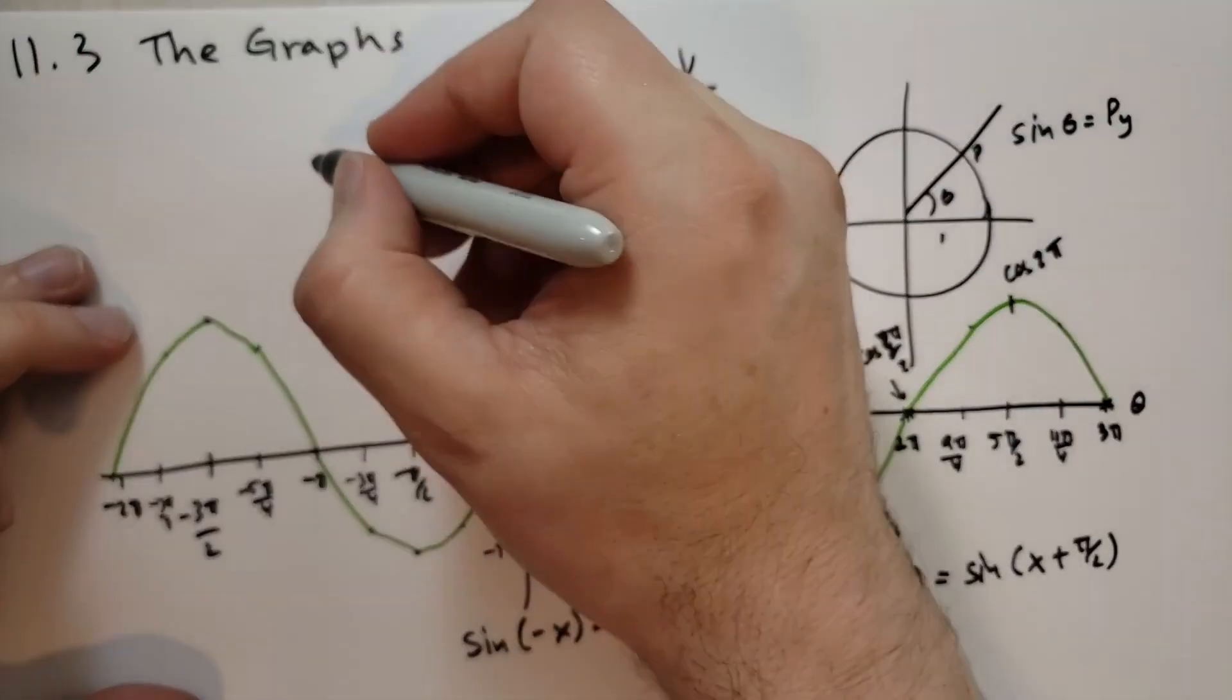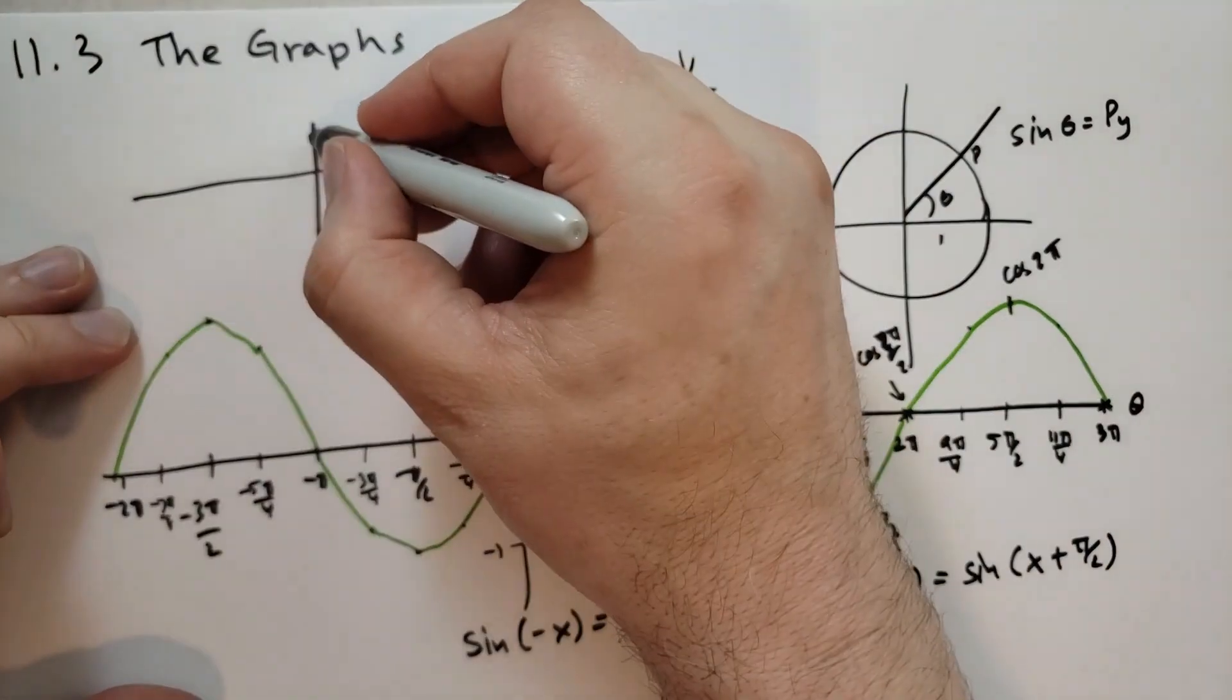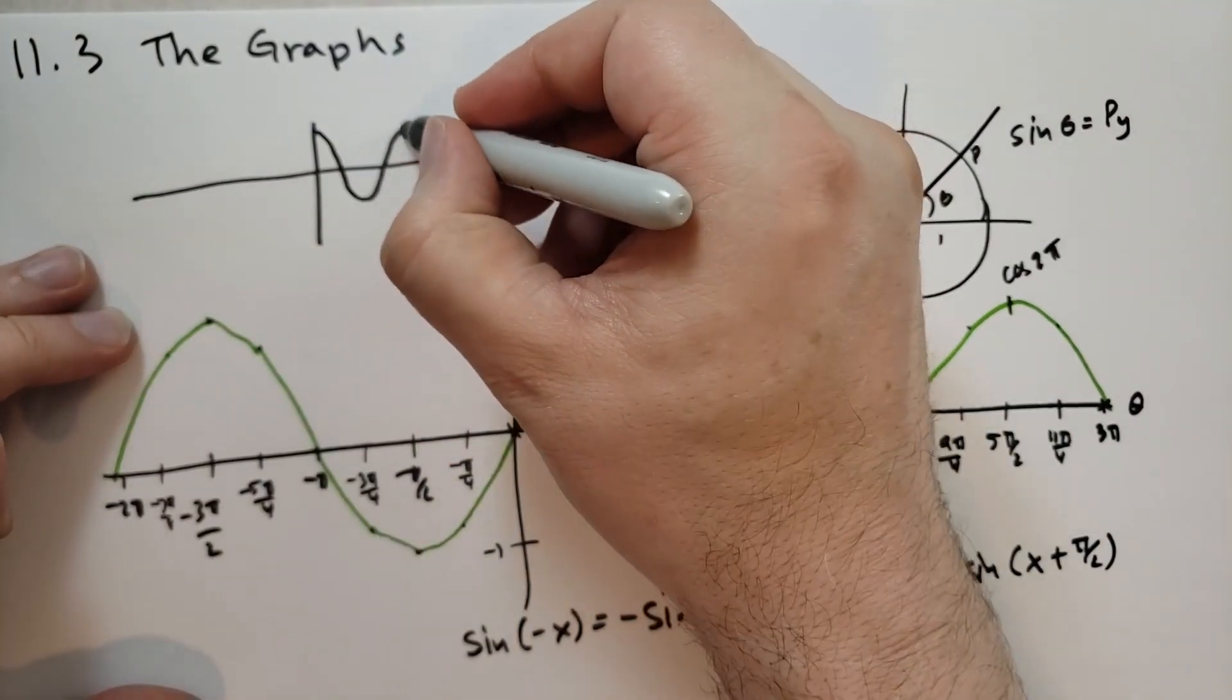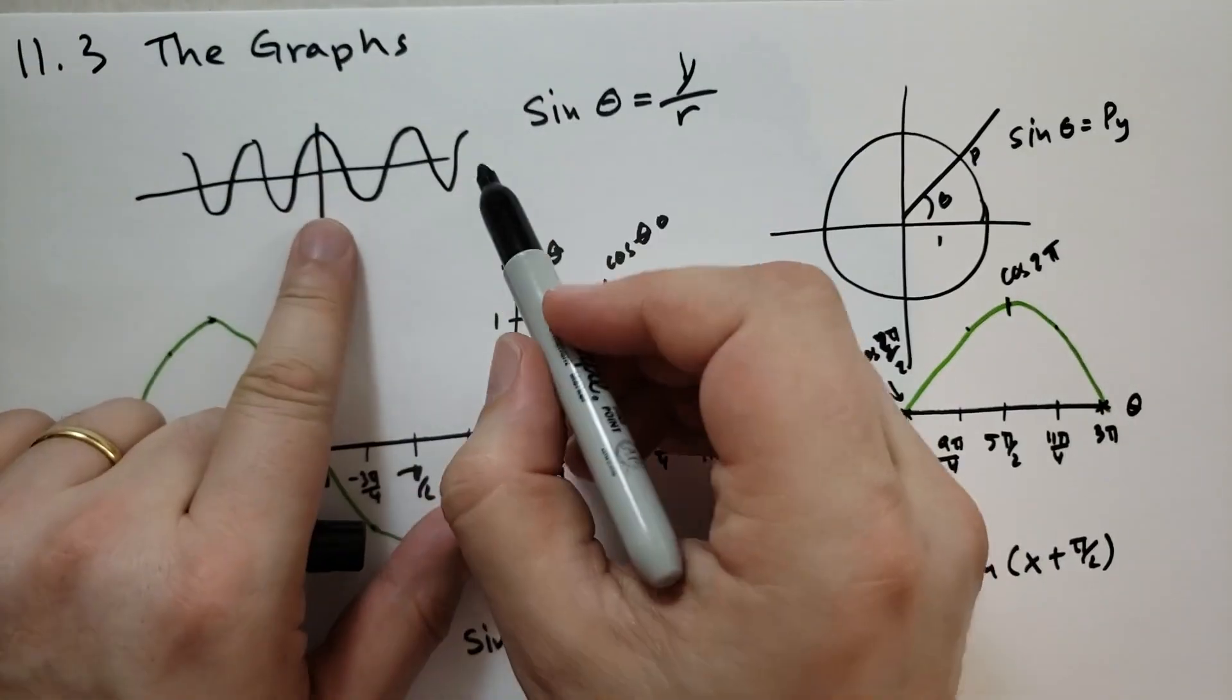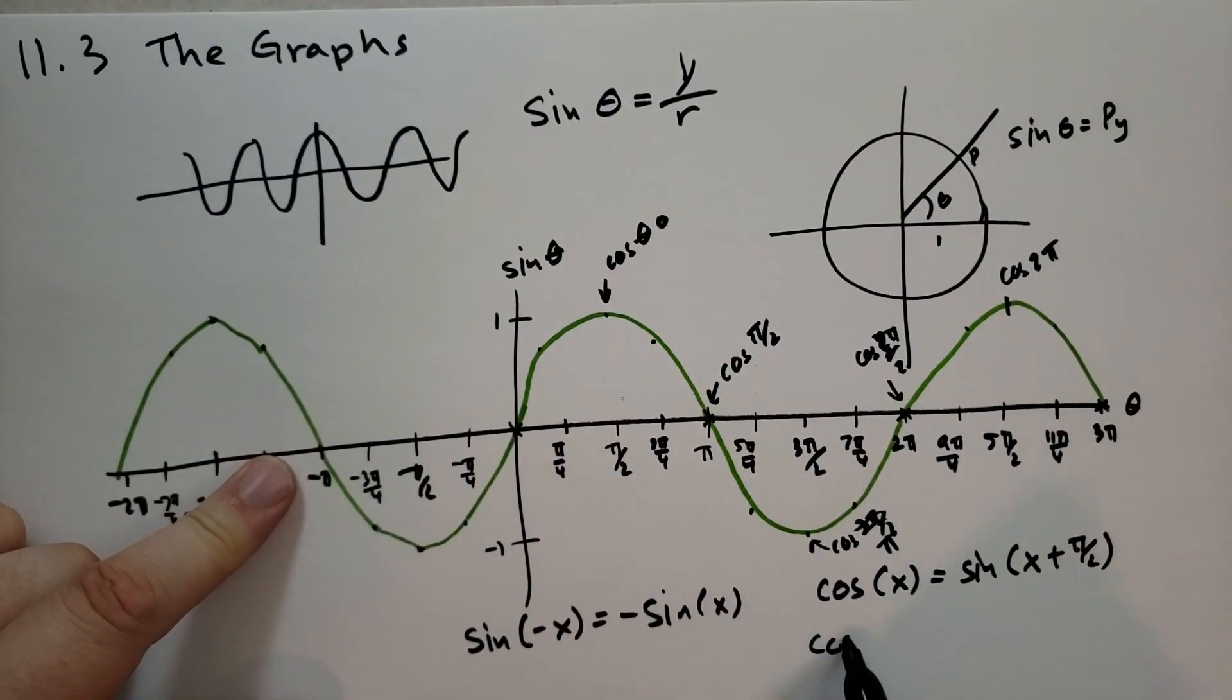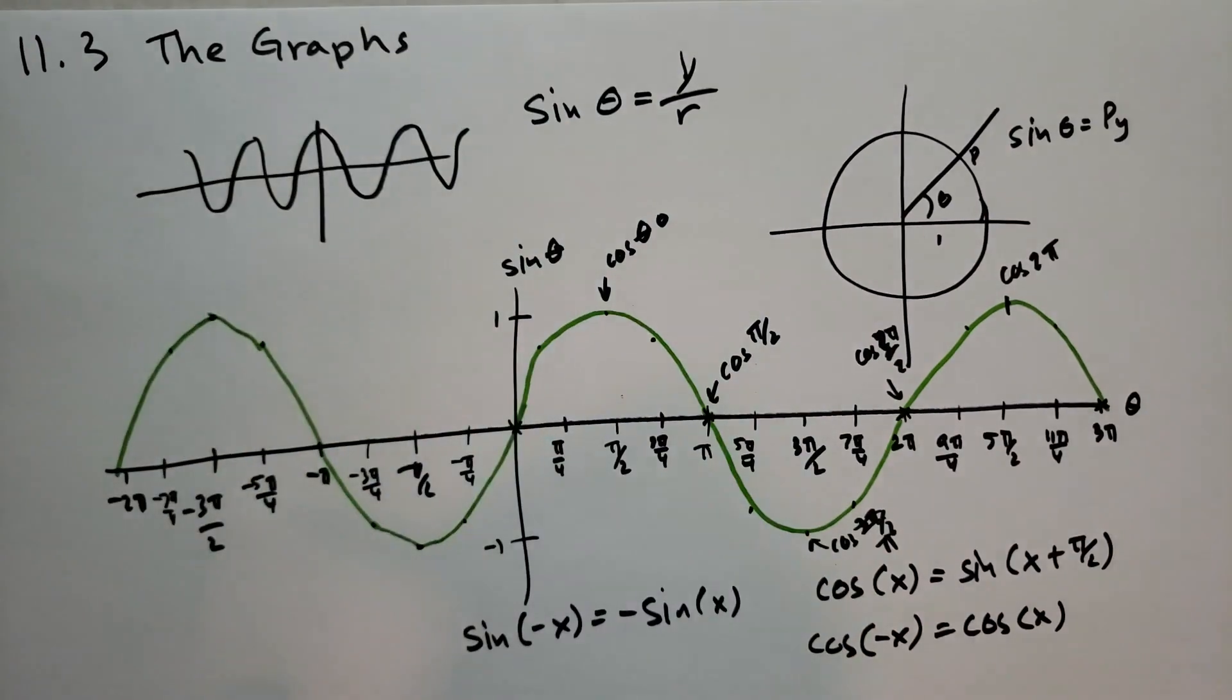So if I were to draw a little graph of what cosine looks like, it's going to start at 1. It's going to go down and then up. And then down and then up. And if you remember, cosine of minus x is the same as cosine of x. So it's just mirrored along the y-axis there. That is what these graphs look like.